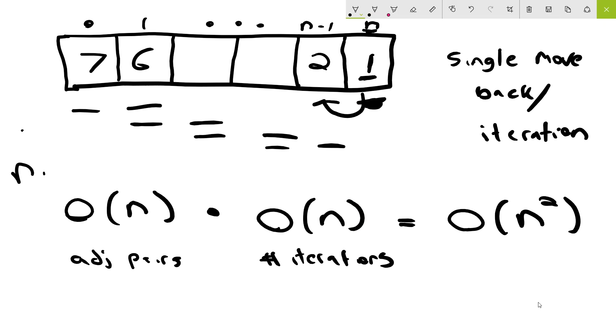So this is the runtime. We also can really quick do the space requirement, the space complexity. And that's pretty simple, we didn't need any extra space to do this. We just swapped elements. We just swapped adjacent pairs of elements. So all we need is the list itself. So all we need is just this list. So that is order n.